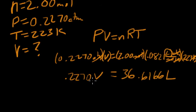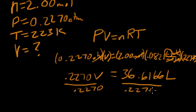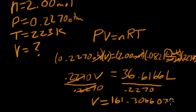Our last step is to isolate the variable, isolate the volume. So I'm going to divide both sides by 0.2270, and on the right-hand side, divide by 0.2270. These cancel. And when you do that, you'll get your volume measurement, which is 161.3066079 liters.